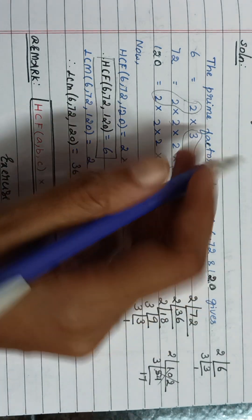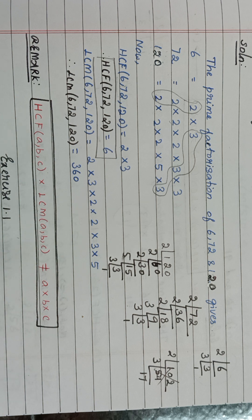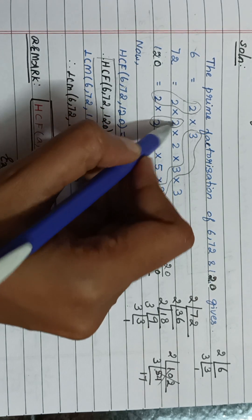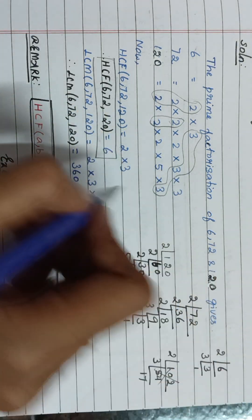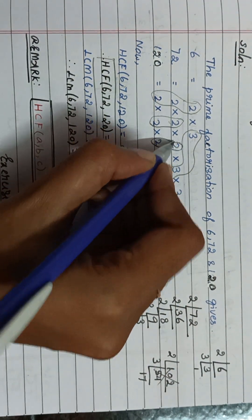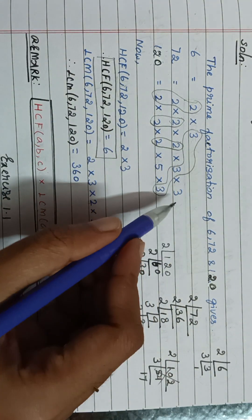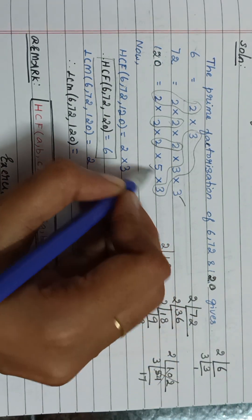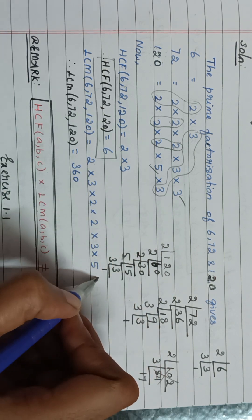Now write the numbers that are common in at least two of the numbers. Here there is a 2 that is common in two numbers — from those two numbers take one 2. Similarly there is another 2 common in two numbers, take one 2. Then check if there is any number common in at least two — if no, write the remaining numbers: 3 into 5. Multiply all those and you get 360.